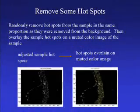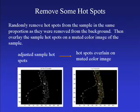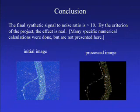Now, the mask can be used to create a synthetic image in which the color-corrected sample is combined with hotspots only from the sample region. Also, hotspots are randomly removed to reflect the way in which a perfect filter would remove noise from the sample if such a perfect filter could actually be constructed. The calculated signal-to-noise ratio is greater than 10. By the criterion of the project, the effect is real.